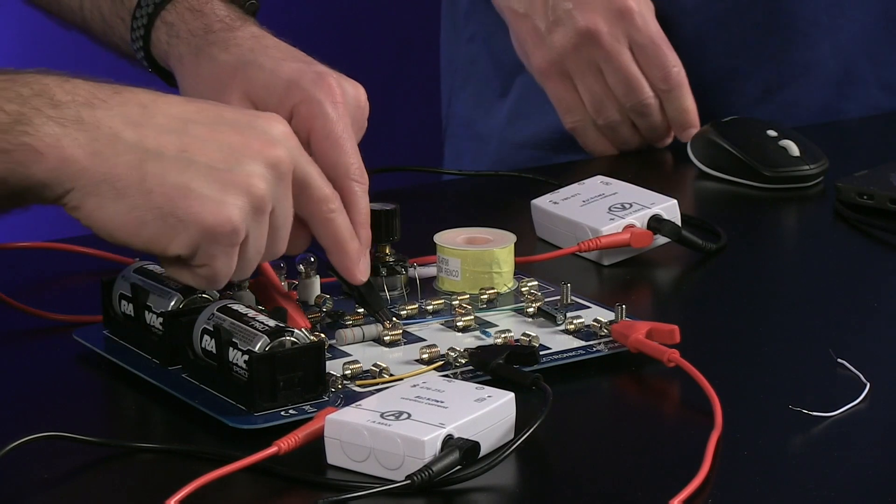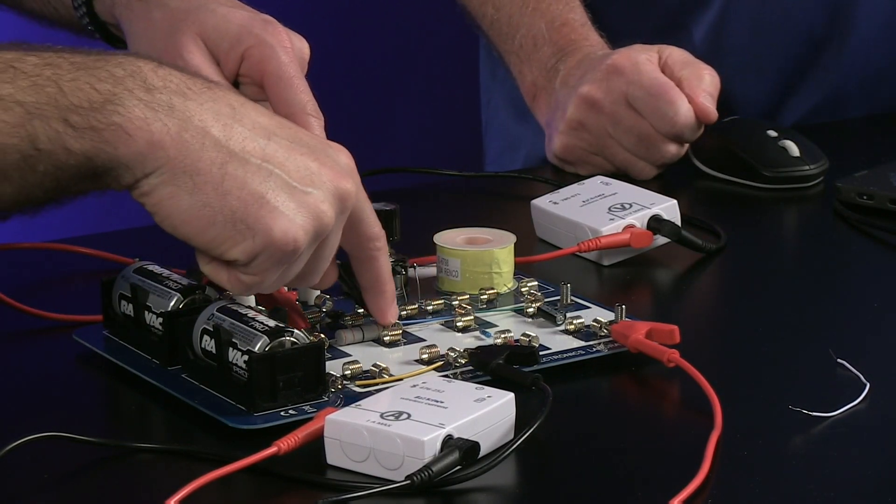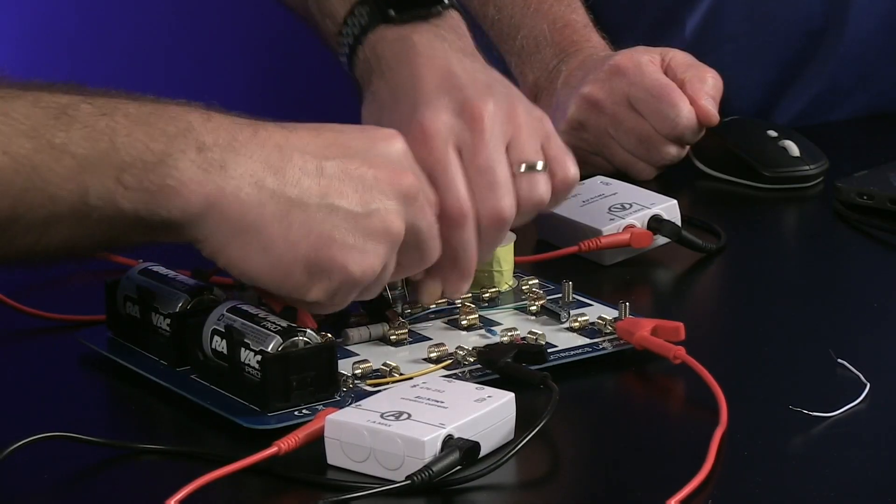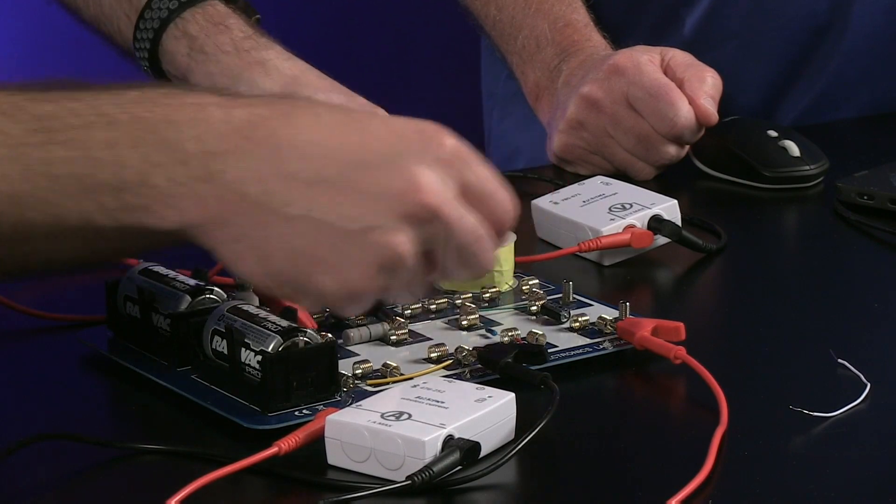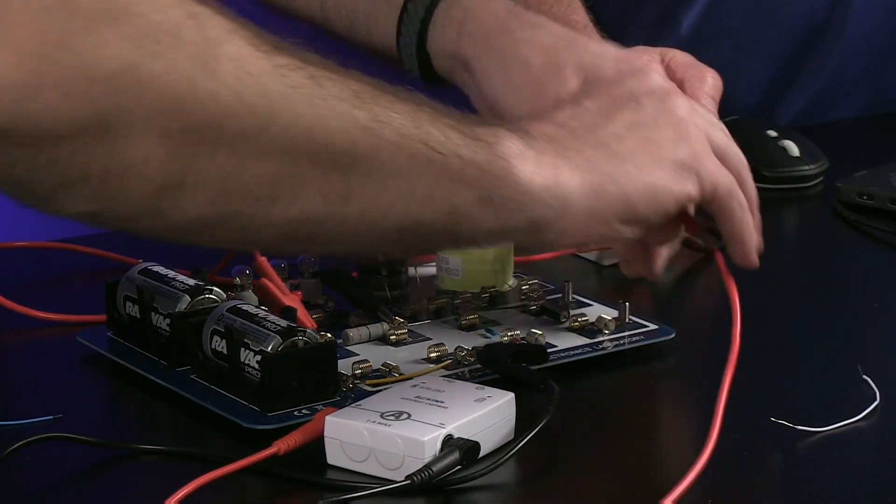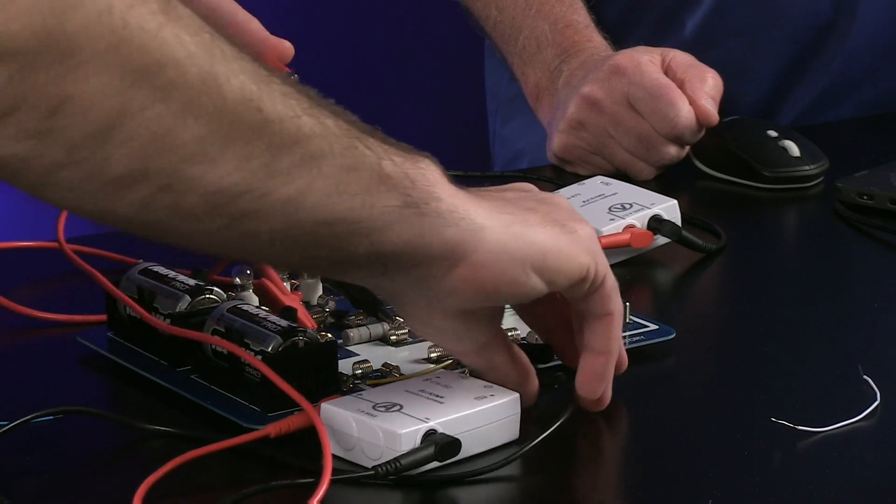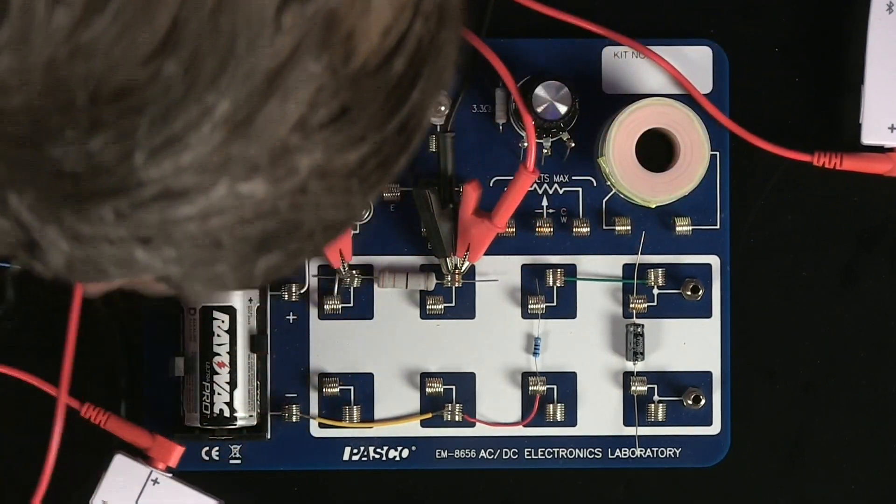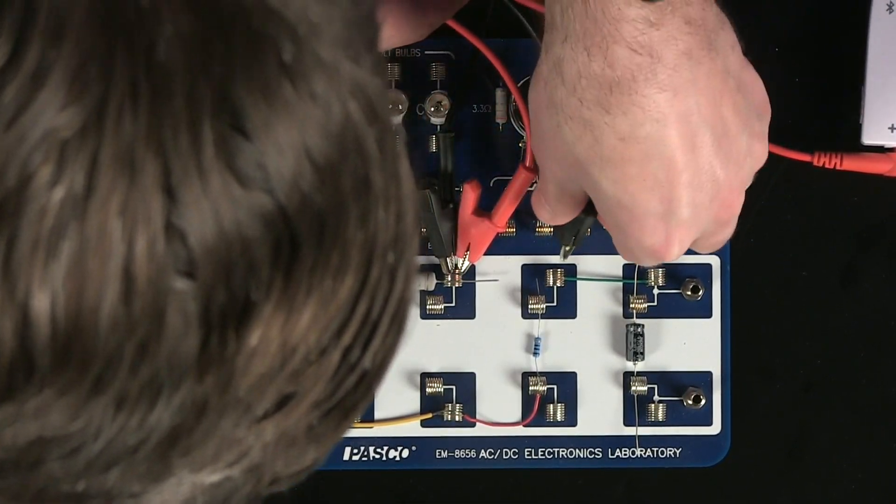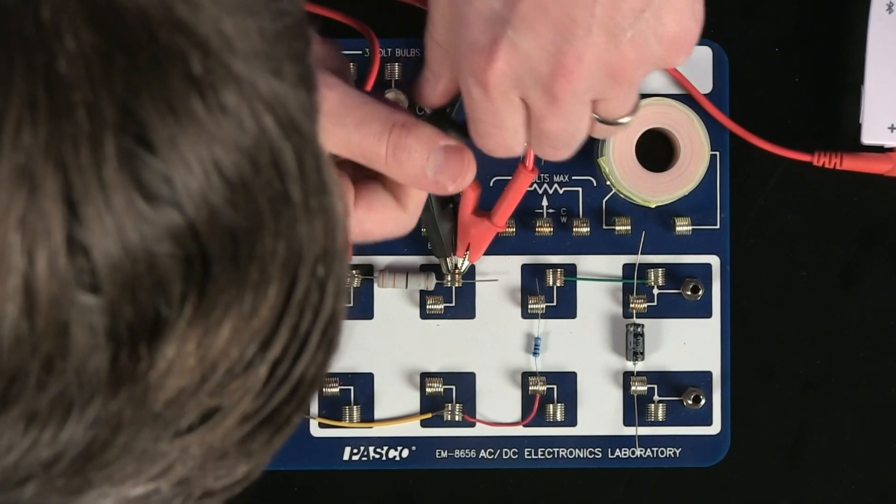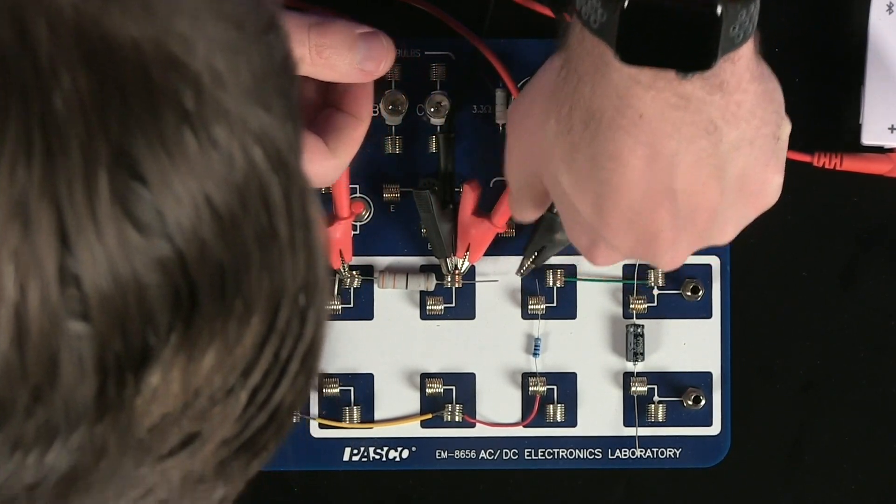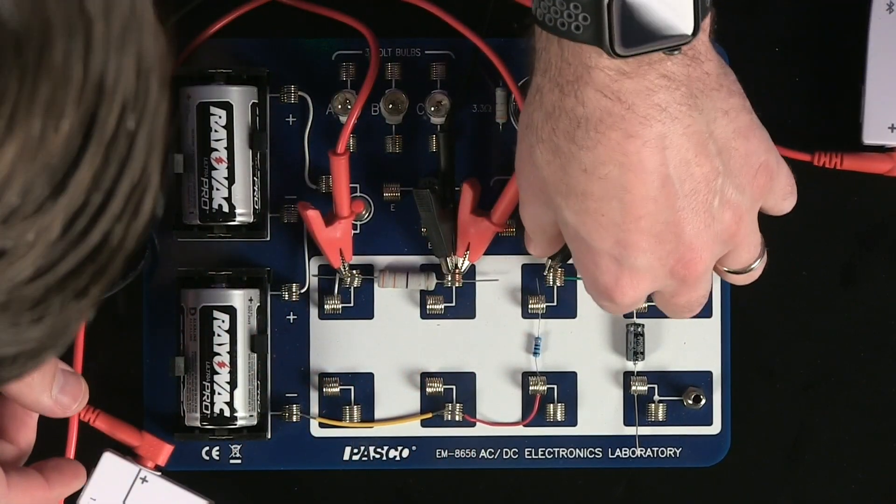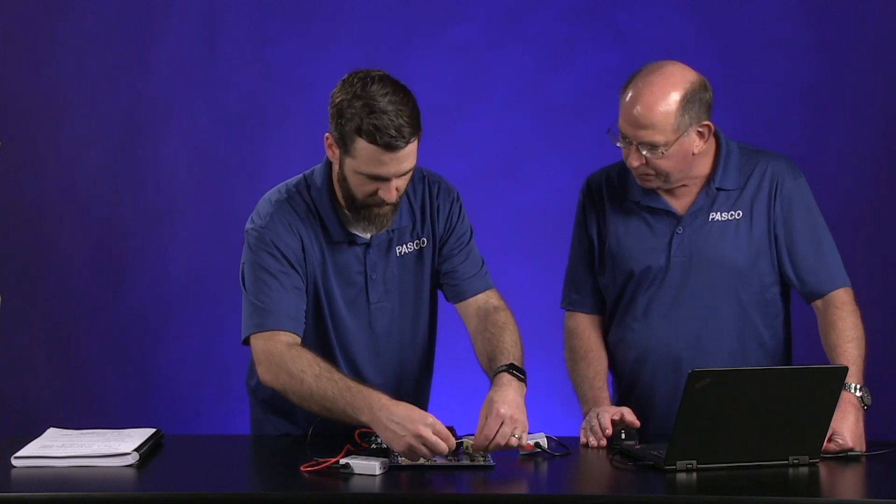And now there's a blue wire right here that connects this end of the resistor to these two components. We're just going to pull that blue and replace it. Yep. And that's just a little snug. So I'm going to take that off for a split second and then replace that with our current sensor.